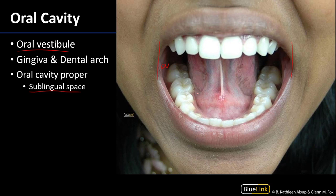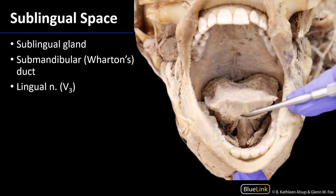Dividing the oral cavity from the sublingual space — which is part of the oral cavity proper — is the oral mucosa contiguous with the ventral surface of the tongue. Here we have a very similar view, this time a cadaveric photograph where the mucosa of the floor of the mouth has been incised and removed so we can see some features.